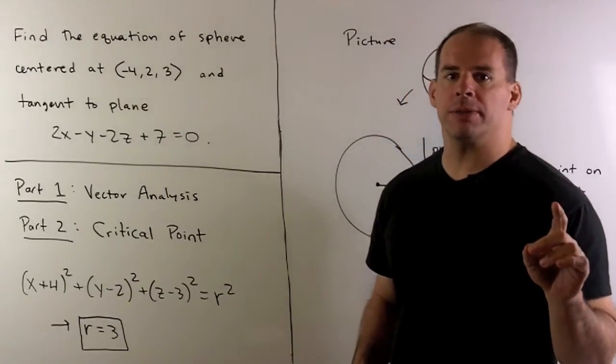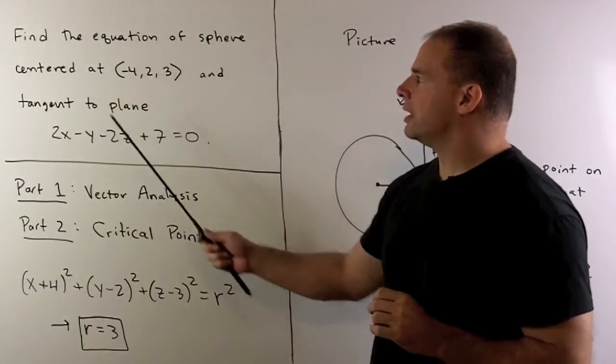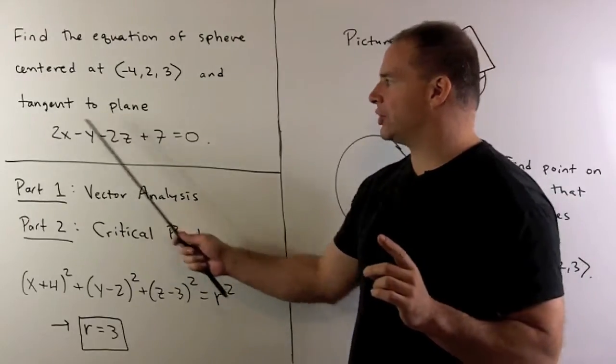To recap the first two parts, we have the problem: find the equation of the sphere centered at a given point, tangent to a given plane.